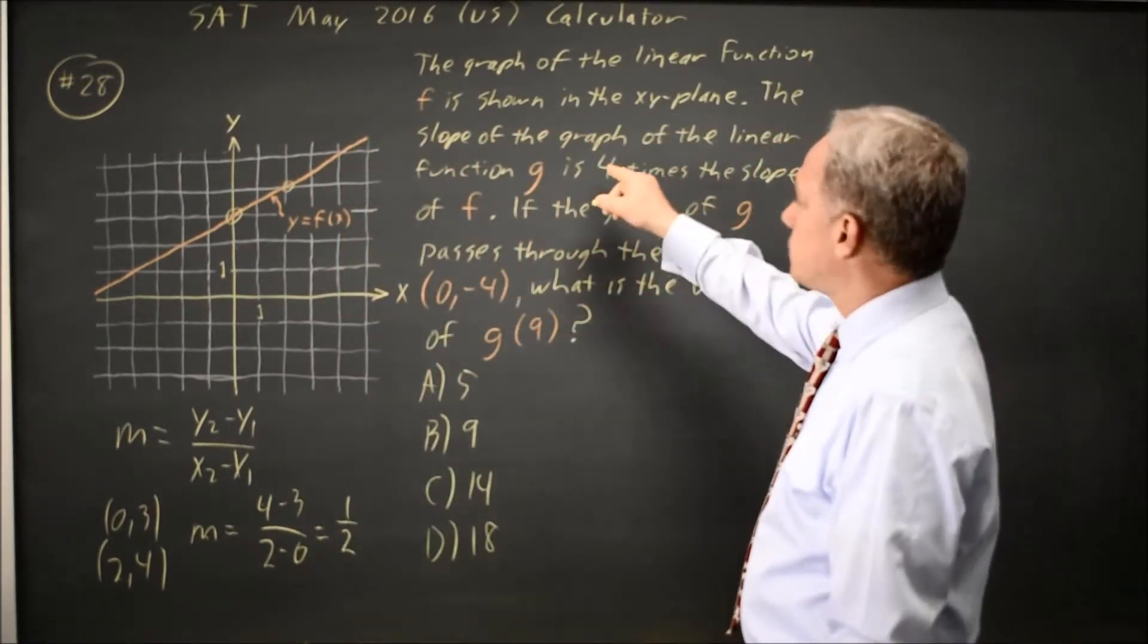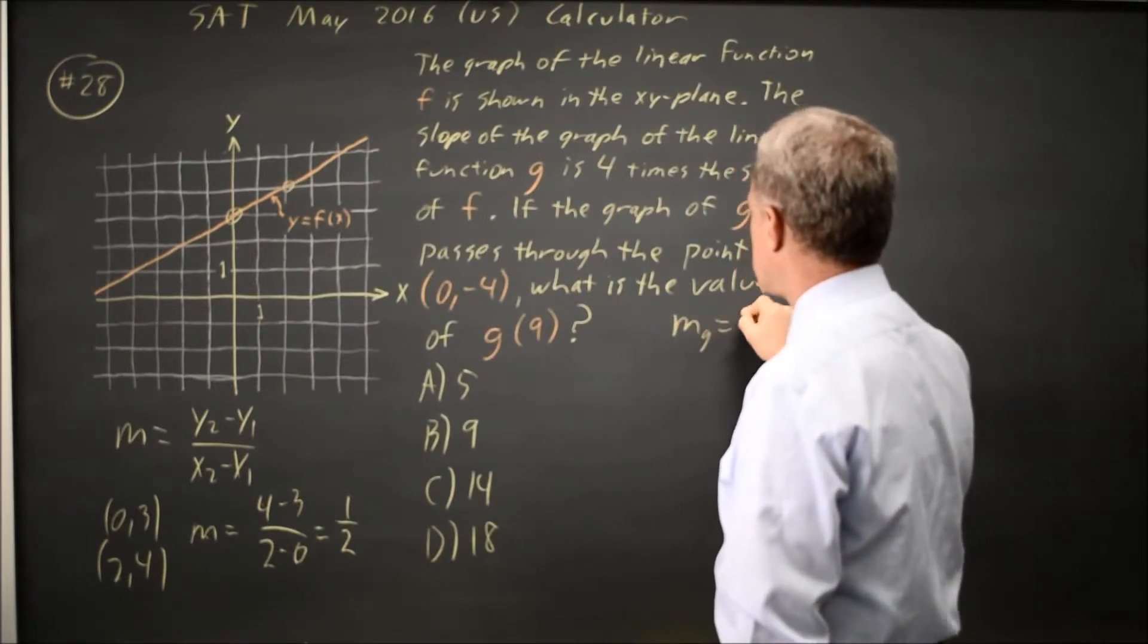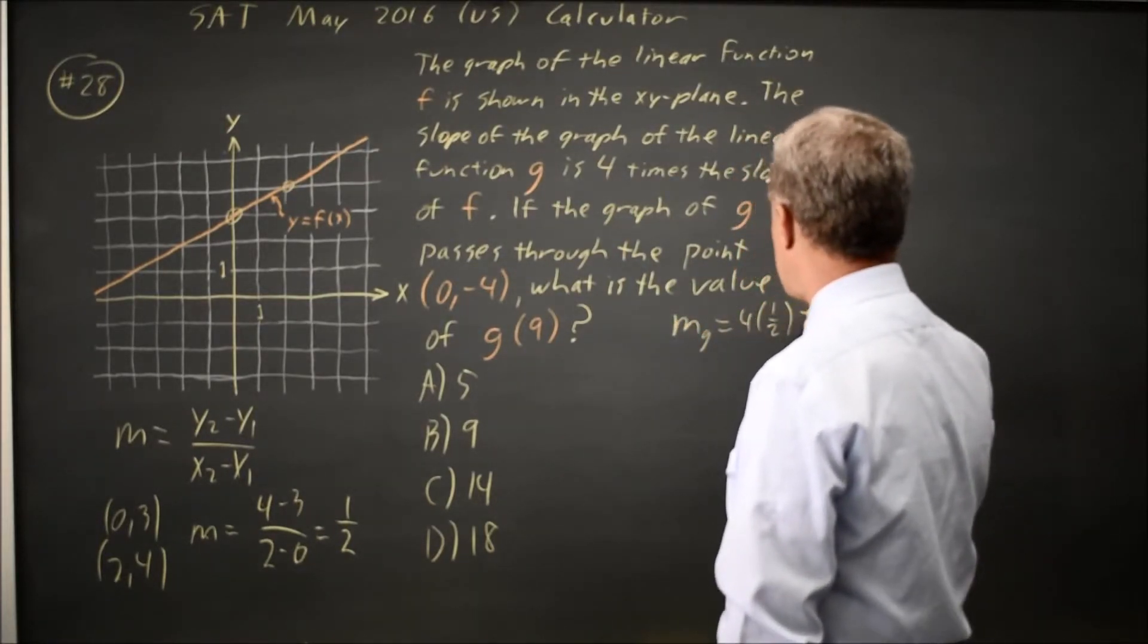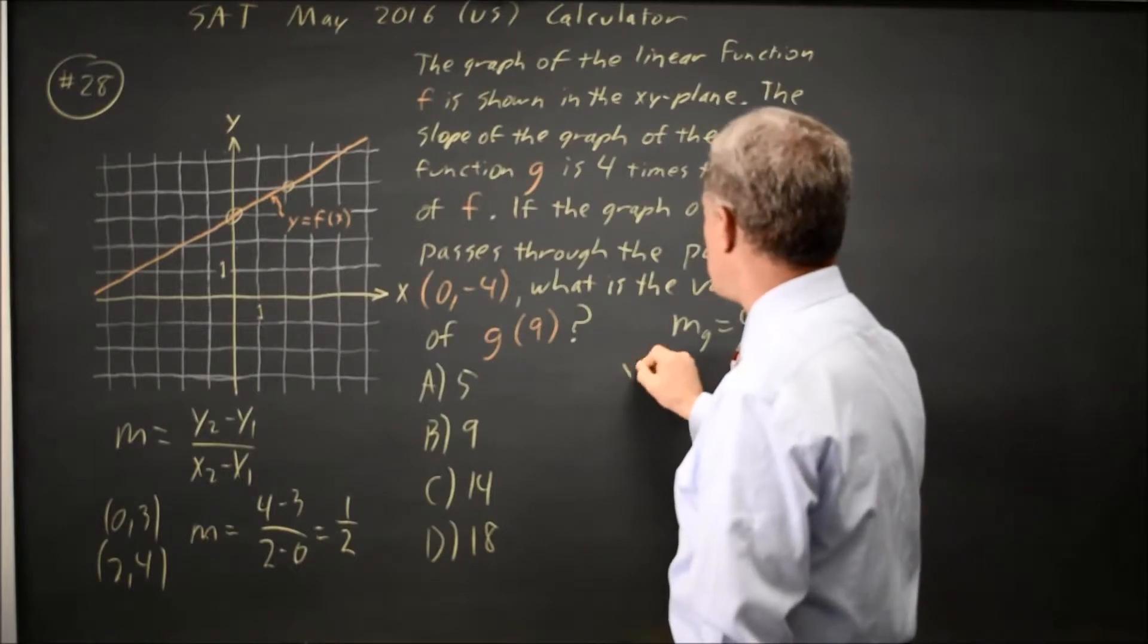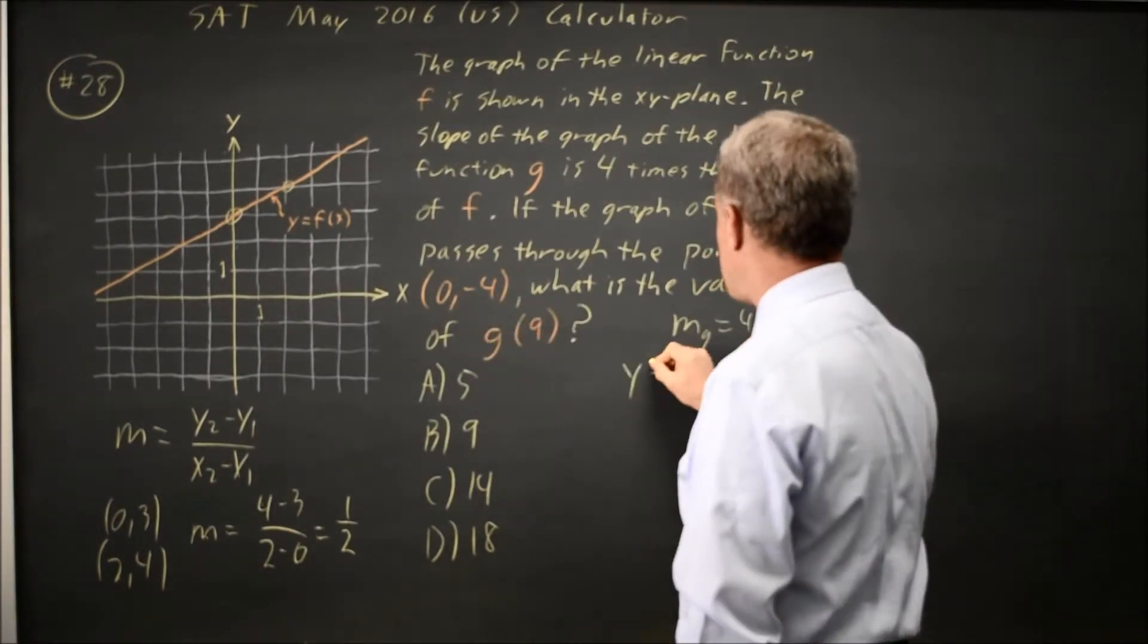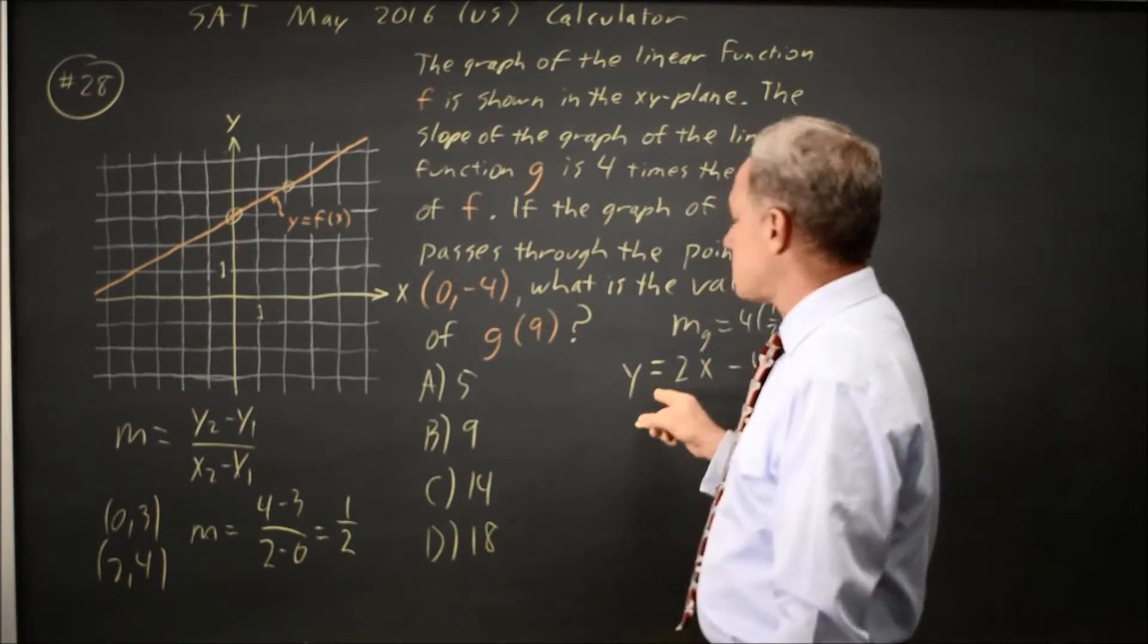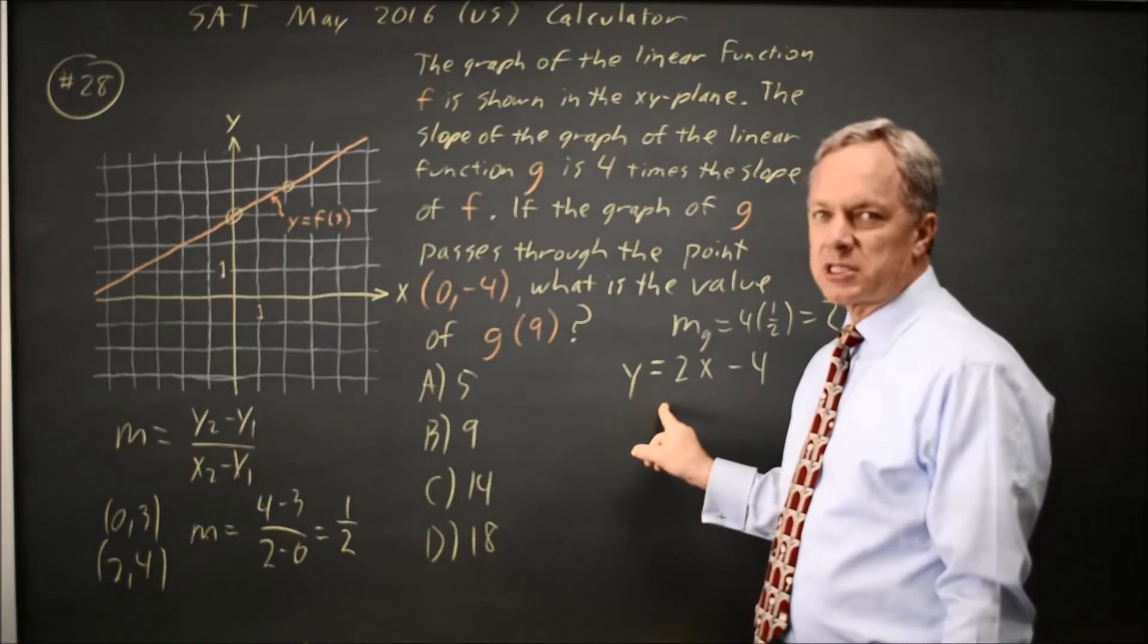The slope of line g is 4 times 1/2, which is 2. This is the y-intercept, so y equals 2x minus 4 has a slope 4 times the slope of line f.